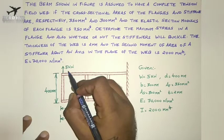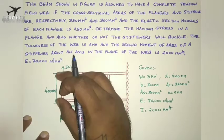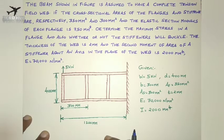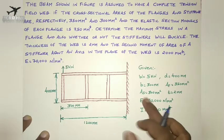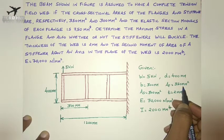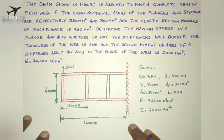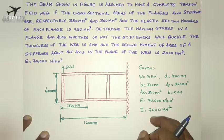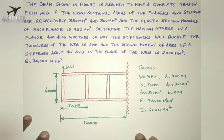This beam is subjected to a load of 5 kN at one end and the total length of the beam is 1200 mm. The depth of the beam is 400 mm and the distance between two vertical stiffeners is 300 mm. The cross-sectional area of the stiffener is 300 mm² and for flanges is 350 mm². The value of D is the depth and B is the distance between two vertical stiffeners. The area moment of inertia is 2000 mm⁴.